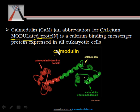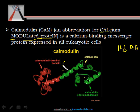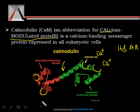Structurally, calmodulin is a small protein approximately 148 amino acids long. It is a dumbbell shaped protein which has an N terminal and C terminal joined together by a central helix. Each domain has two high affinity sites for binding of calcium. Binding of calcium to these sites causes conformational changes in calmodulin.